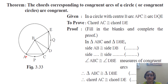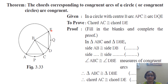Angle ABC is congruent to angle DBE, because arc APC is congruent to arc DQE. Arcs are congruent, so their corresponding central angles are congruent. So, two triangles — triangle ABC congruent to triangle DBE — by the SAS (side-angle-side) test. And therefore, chord AC is congruent to chord DE, by corresponding sides of congruent triangles.